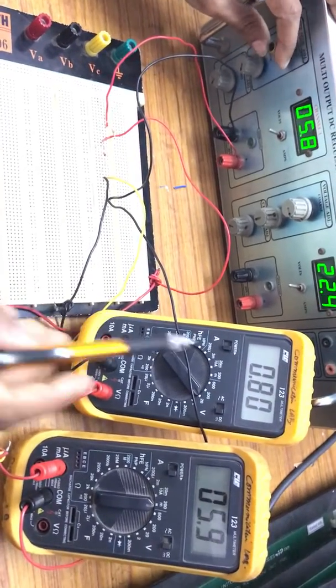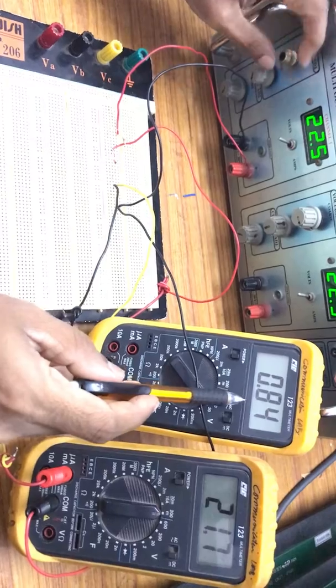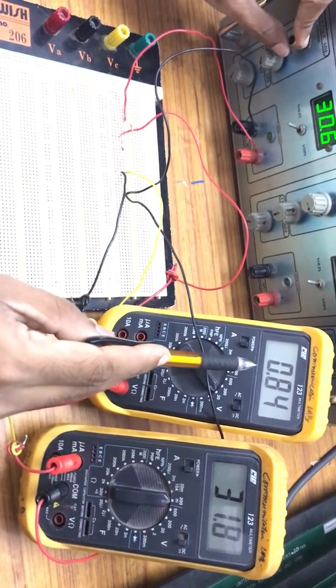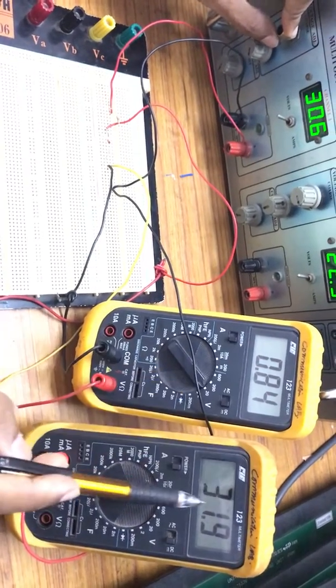When you are increasing the voltage, voltage across the diode is going to increase, and the current across the diode. In the previous silicon diode, at 0.68 volts, you got maximum current.